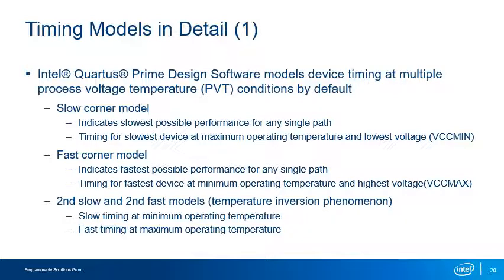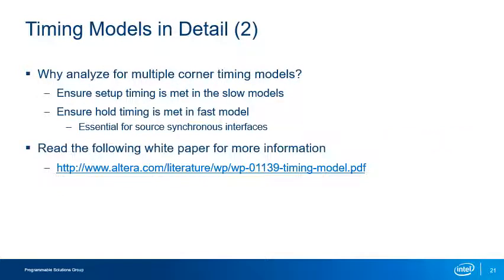Timing Analyzer checks timing in at least two process corners by default: a Slow Corner, defined by the device's highest operating temperature and lowest operating voltage, and a Fast Corner, defined by the device's lowest operating temperature and highest operating voltage. If the tool ensures setup timing is met in the Slow Corner and hold timing is met in the Fast Corner, timing is guaranteed across all supported device processes, voltages, and temperature ranges — often referred to as the PVT of the device.